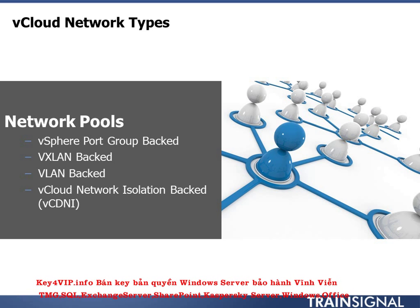The final one is the vCloud network isolation-backed, or VCDNI. This has been a more traditional way to set up an overlay network, using special identifiers to isolate different pieces of the network. It requires just one VLAN — it'll even use VLAN 0 if you don't have one, though I recommend a VLAN for security purposes. It's relatively easy to implement, doesn't need multicasting, and only requires a little overhead in the Ethernet frame. It can be easier to use than VXLAN with fewer requirements, but VCDNI is limited to 10 network pools per vCloud instance, unlike VXLAN which gives you 10,000 pools.